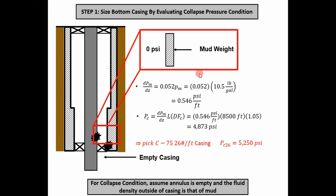Step one is to size the bottom of the casing string by evaluating the collapse pressure condition. We consider an empty casing string — on the inside we have 0 PSI, and on the outside we have the pressure caused by the hydrostatic head of the mud above it. You can pause the video and work through the math yourself.